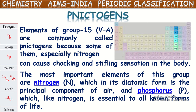Which elements are called Nicogens? The 5A group or 15th column elements in the modern periodic table are called Nicogens — the fourth column from the extreme right side. They are nitrogen, phosphorus, arsenic, stibium and bismuth. These are called Nicogens because of their property to cause suffocation or choking.